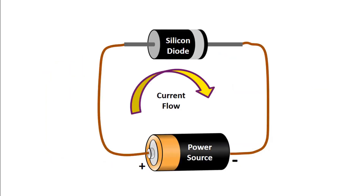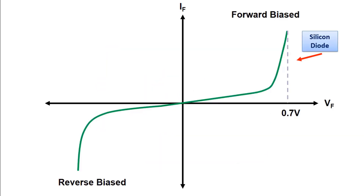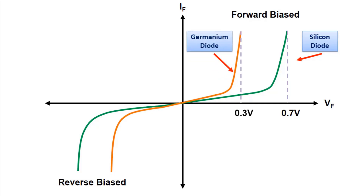If a normal diode is made of silicon, it allows current to flow after approximately 0.7V voltage. In other words, even if it is connected correctly below this voltage value, it doesn't allow current to flow. However, if it is made of germanium, it allows current to flow after approximately 0.3V. This is considered theoretically when doing circuit analysis. We can show this on the diode's current-voltage graph. The current-voltage graph of the normal silicon diode shows it allows current to flow after approximately 0.7V when polarized forward. The germanium diode allows current to flow after approximately 0.3V when polarized forward.